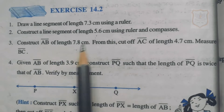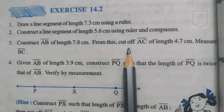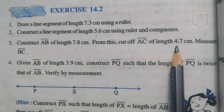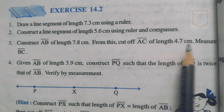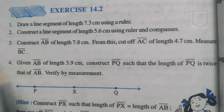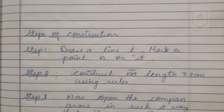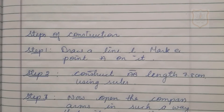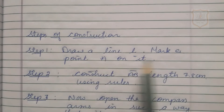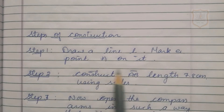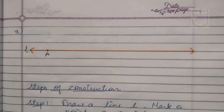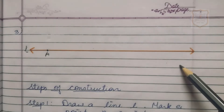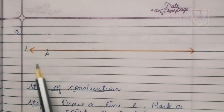We have to construct line segment AB with length 7.8 centimeter, then cut off line segment AC with length 4.7 centimeter, and then measure line segment BC. Solution for Question 3 — Steps of Construction. Step 1: Draw a line L and mark a point A on it.